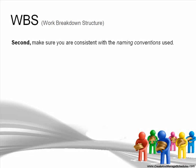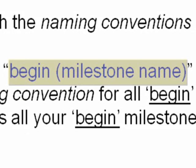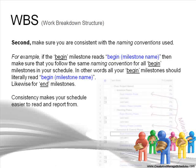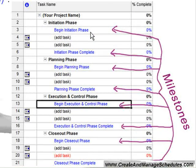Second, make sure that you are consistent with the naming conventions that you use. For example, if the beginning milestone reads 'Begin' and then the milestone name, then make sure that you follow the same naming conventions for all begin milestones in your schedule. All of your begin milestones should literally read 'Begin' and then the milestone name. Likewise for the end milestone. Consistency makes your schedule easier to read and report from. Examples include: Begin Initiation Phase, Initiation Phase Complete, Begin Planning Phase, Planning Phase Complete.